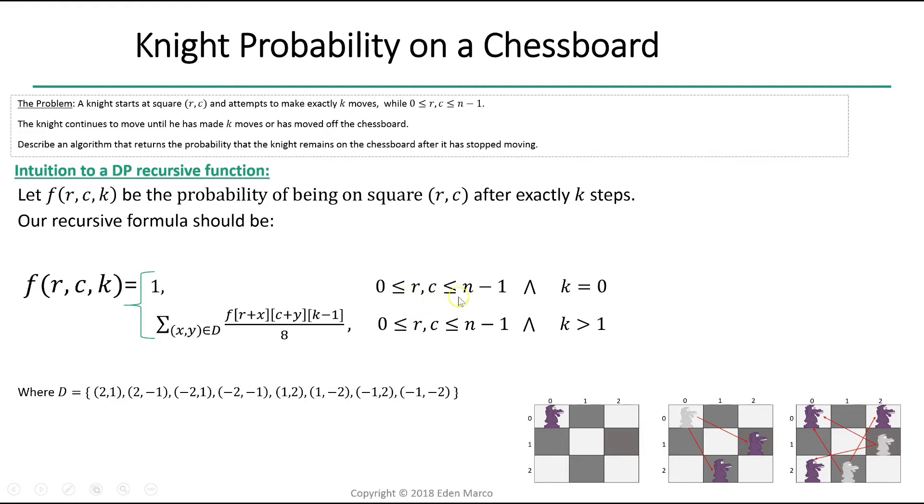In the base case, where we are in bounds on our board and we don't have to make any moves, we simply return 1 because in this case, we are certain to stay within our board.